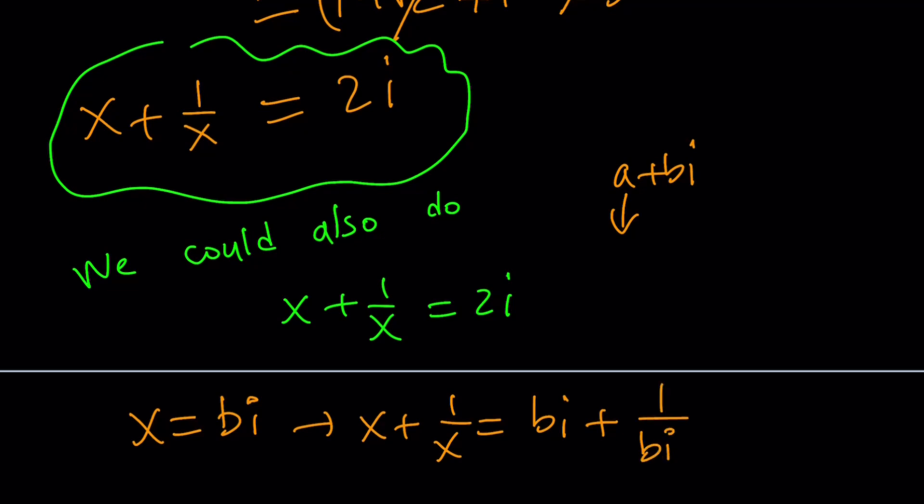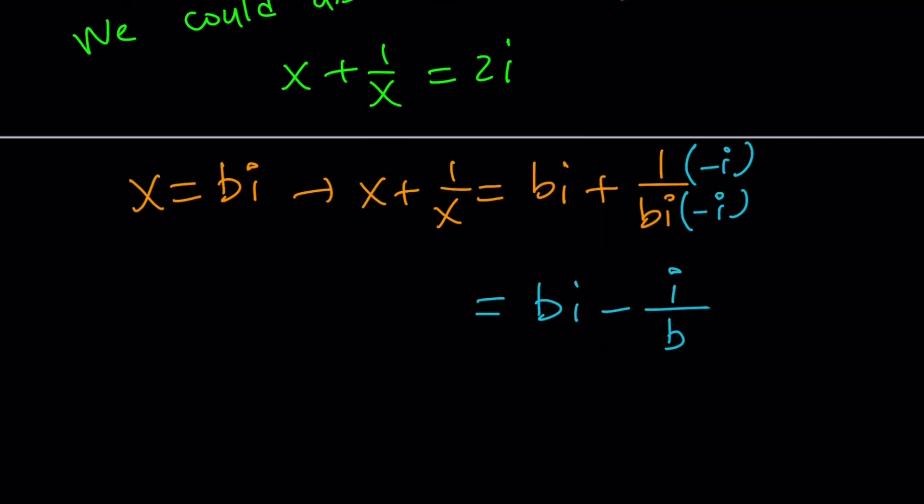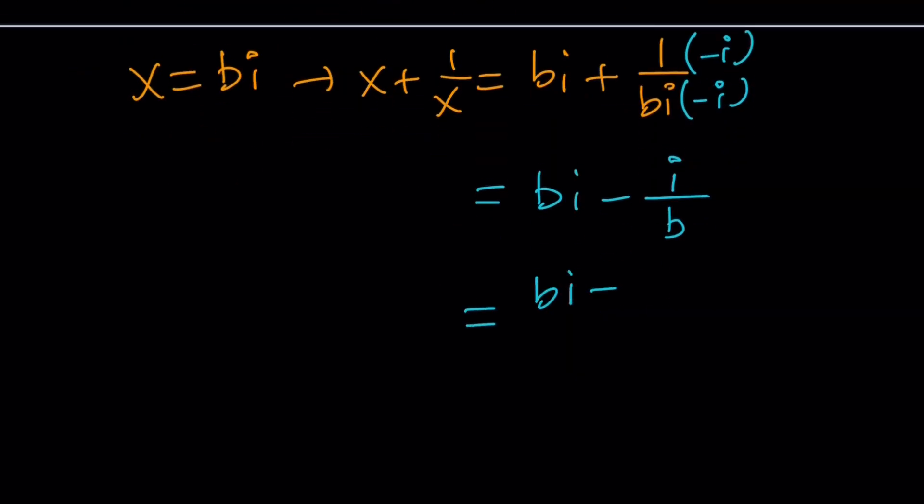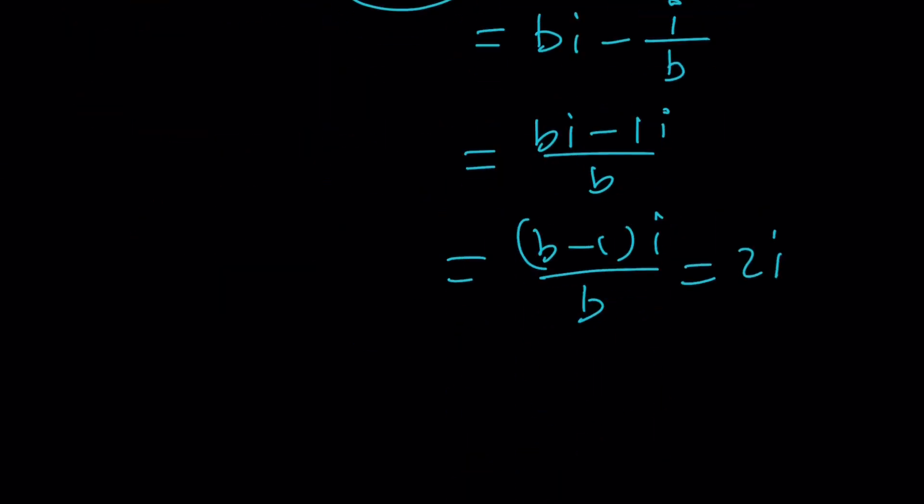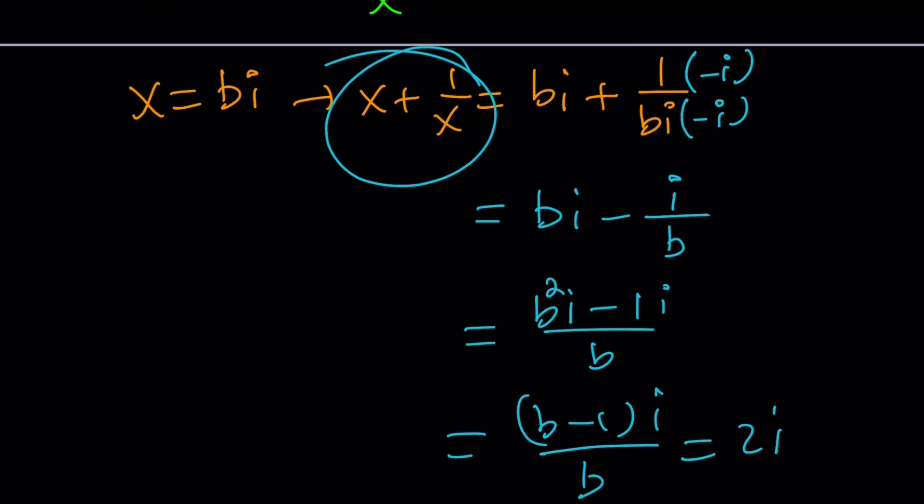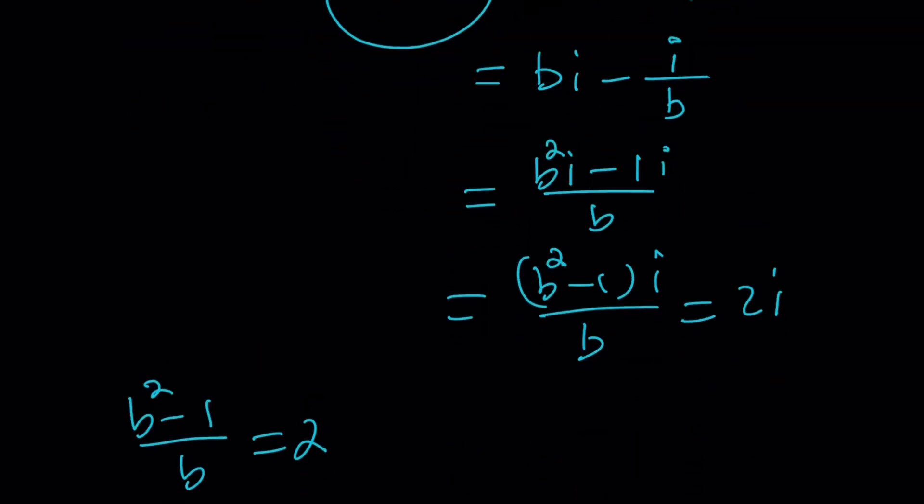1 over x is just going to be 1 over bi. Obviously, I want to get rid of the i at the bottom, so let's multiply this by negative i again. Some people will multiply by i. That's okay, but that's just going to bring a negative at the bottom, which I don't like. It's up to you. The top is going to be minus i, and at the bottom, you're going to get negative bi squared. Negative i squared is a positive one, so it's just going to be b. And then if you make a common denominator, it's just going to be bi minus 1i divided by b, or b minus 1i over b. Now, remember, this sum is supposed to equal 2i, so this is supposed to equal 2i, which means b minus 1 over b is equal to 2. Now, you've got to remember, and by the way, I messed up. It's supposed to be b squared, not b.